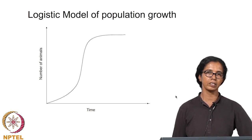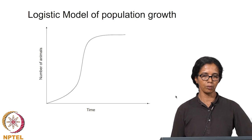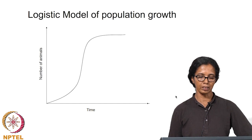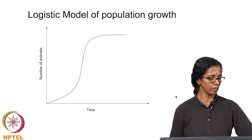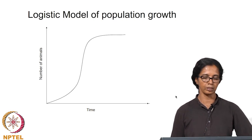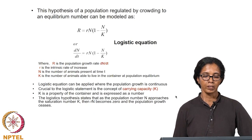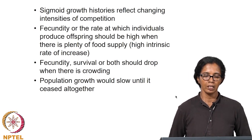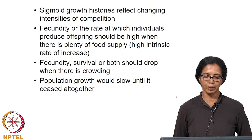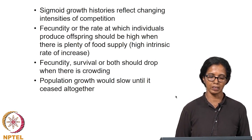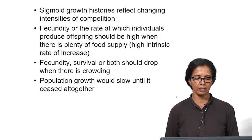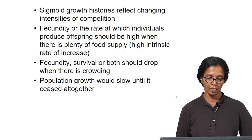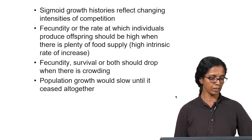The logistic model of population growth essentially defines the growth of a population in the absence of competition. It is a sigmoidal curve which tapers off to an equilibrium level limited by either resources or some other external factors. The sigmoidal growth histories reflect changing intensities of competition. Fecundity, or the rate at which individuals produce offspring, should be high when there is plenty of food supply — that is a high intrinsic rate of increase. Fecundity and survival both should drop when there is crowding and population growth would slow until it ceased altogether.